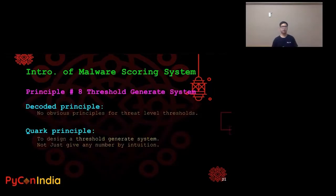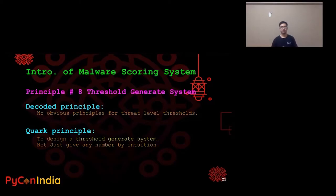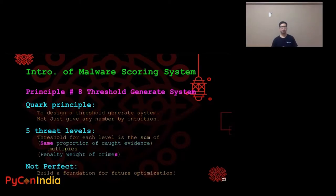The last principle, number eight: threshold generation system. After calculating the total penalty weight for a malware, we need threat-level thresholds so we can tell which threat level the malware falls into. Unfortunately, we couldn't find this in criminal law, but we know we need to design a threshold generation system — not just give any number by intuition. So we decided that the threshold for each label is the sum of the same proportion of found evidence multiplied by the penalty weight of a crime. We know it is not a perfect solution, but we are sure we've built a foundation for future optimization.